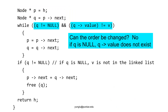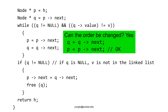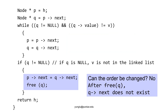The next question is whether we can swap the order of the two conditions in the while loop. The answer is no — we must check whether q is null first. If q is null, the second condition is not checked. If q is not null, the second condition checks whether q's value matches v. The next question is whether we can reorder the two statements freeing and moving q. The answer is no — after freeing q, q's next does not exist anymore.